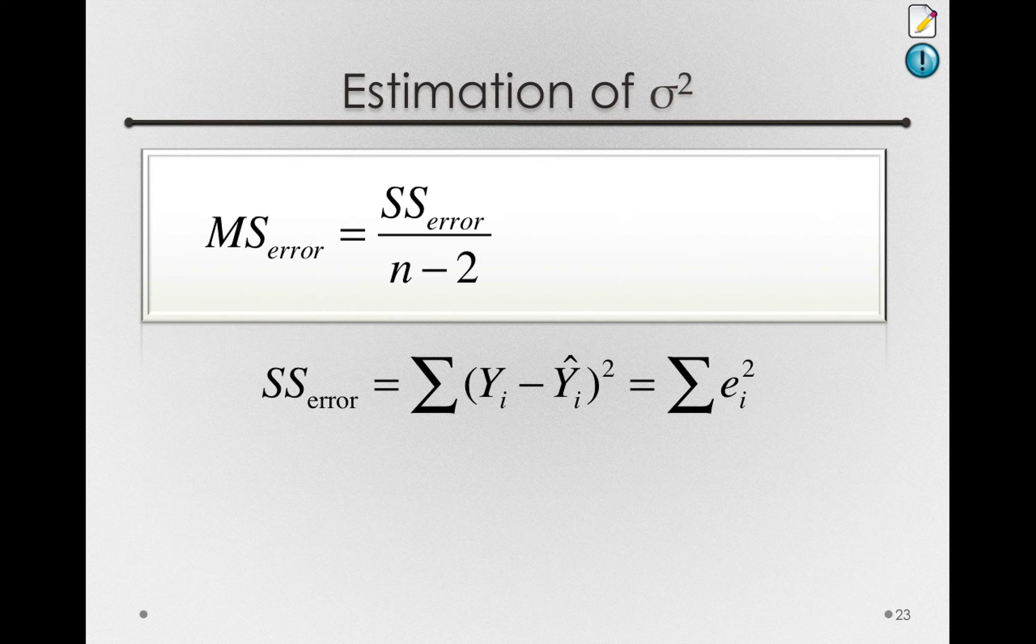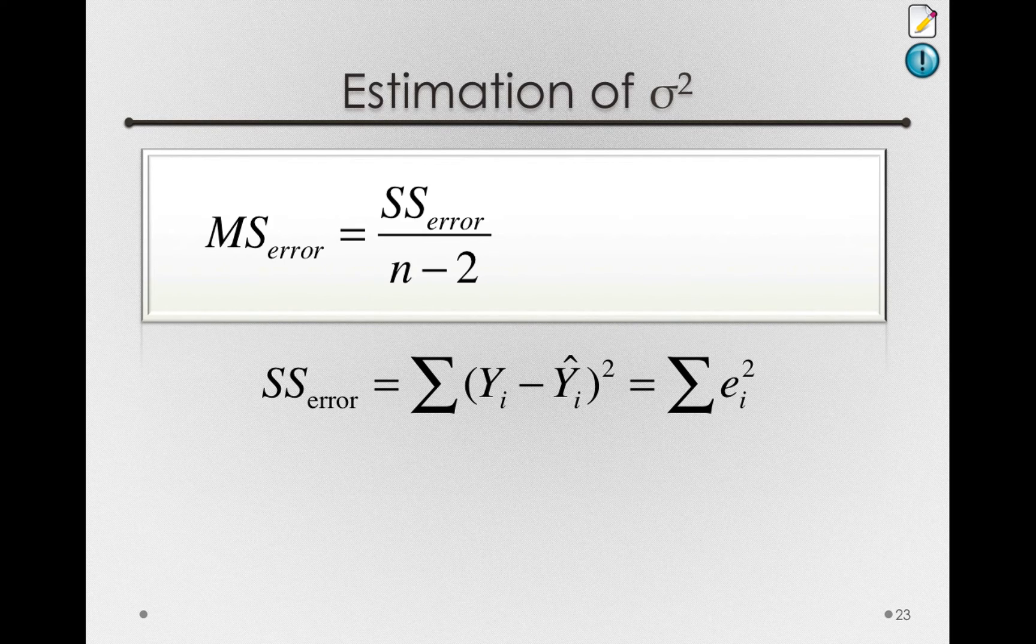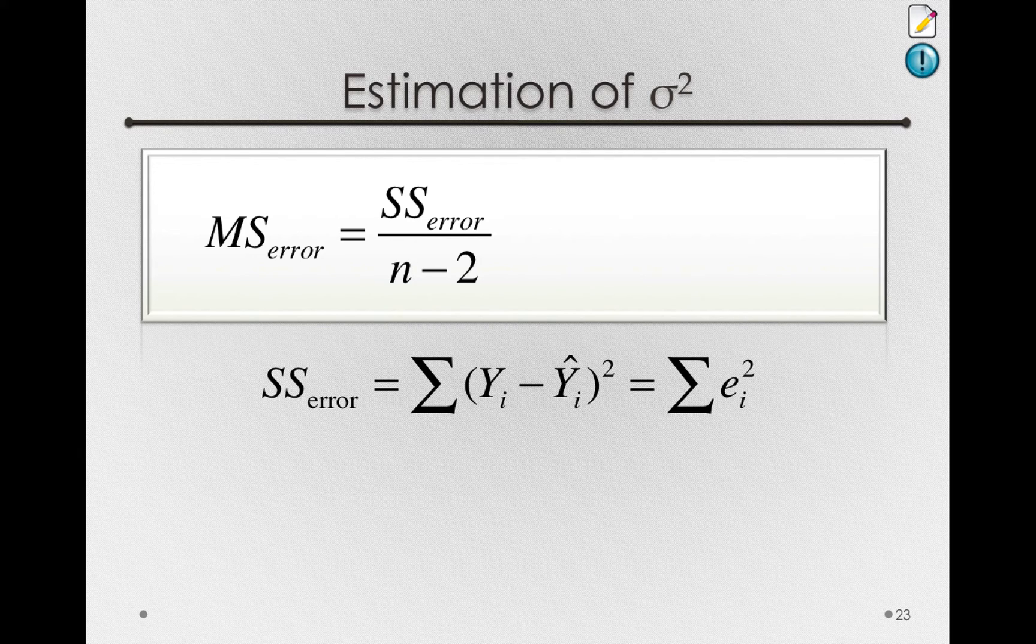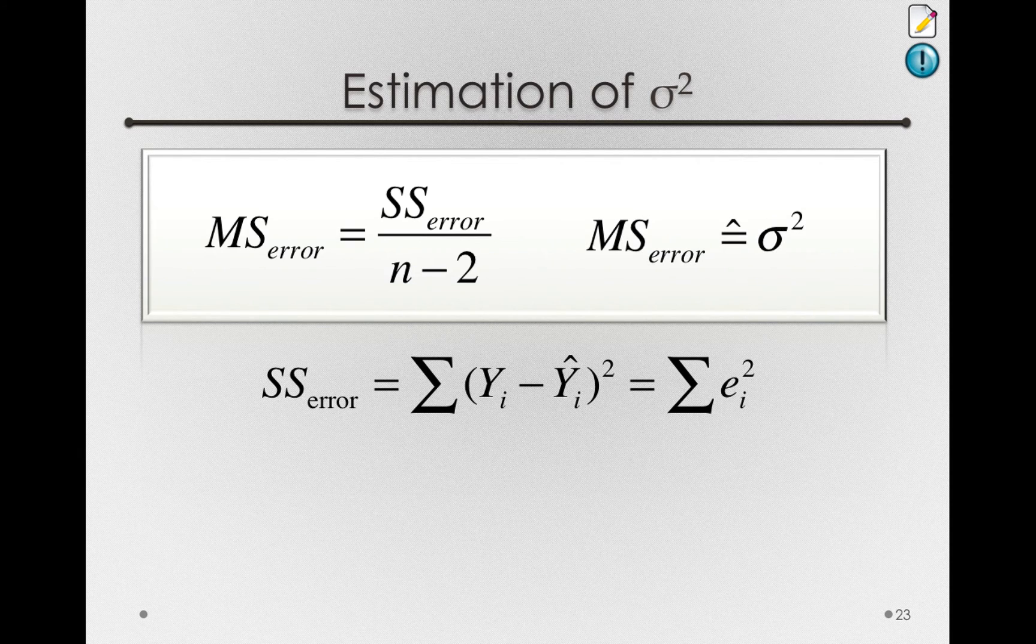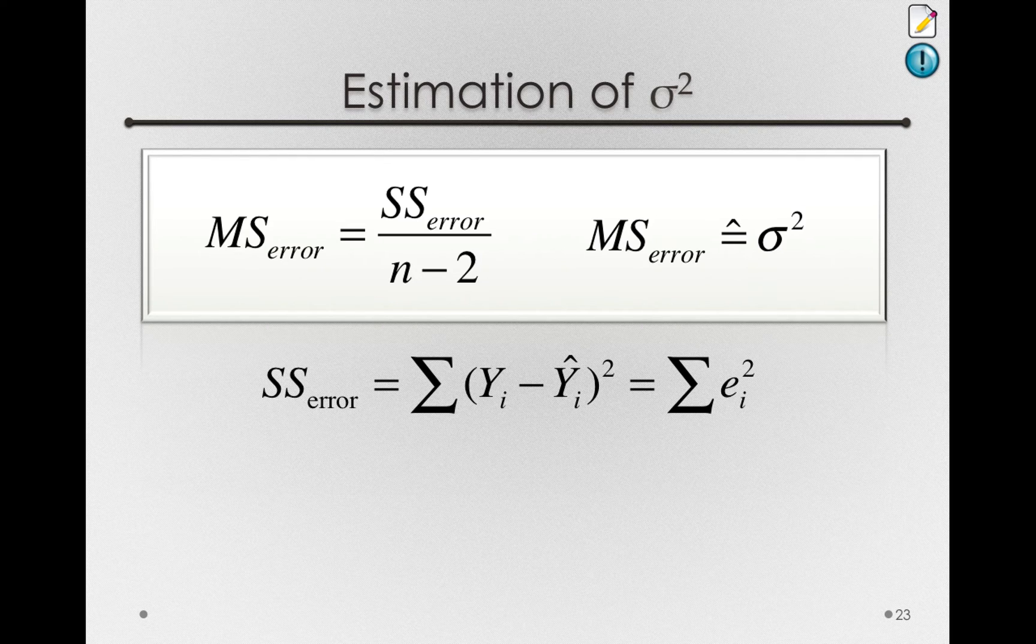That is, b sub 0 and b sub 1. So we're using up two degrees of freedom in order to estimate error. So the degrees of freedom for error is simply n, the number of individuals, minus 2. And mean square error in our model will be our best unbiased estimator of the population variance.